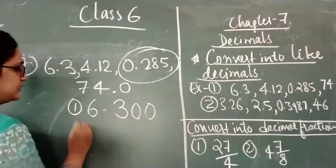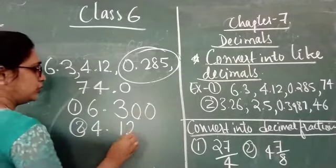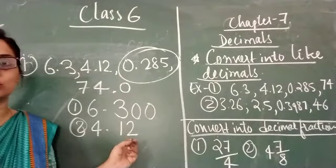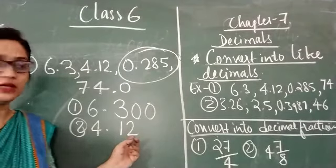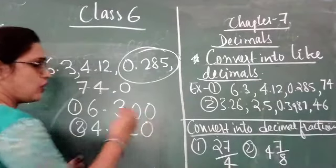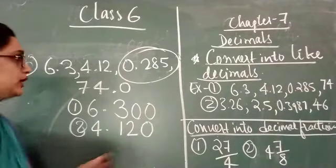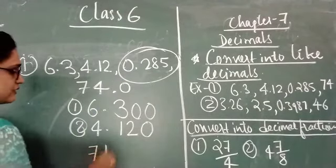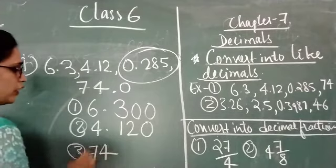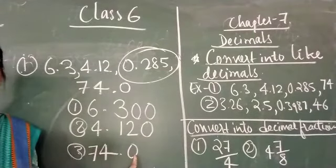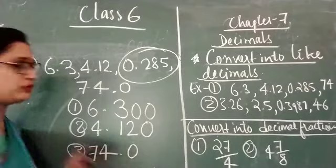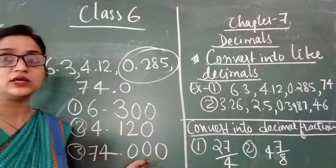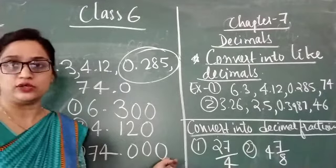Now the second one is 4.12 — the decimal place value is 2, but we have to make it 3, so let us put 1 zero here, making it 4.120. Now 0.285 is already at 3 places. The next one is 74.0 — it has 1 place value, we have to make it 3, so it becomes 74.000.